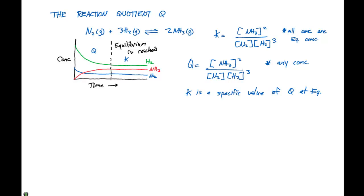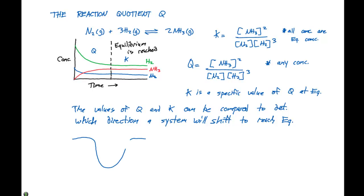And the values of Q and K can be compared to determine which direction a system will shift to reach equilibrium. So let's think about kind of an equilibrium well, and we know that equilibrium happens down here. And remember, equilibrium is a special point where Q is equal to K.